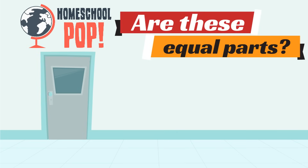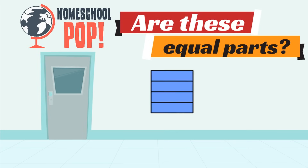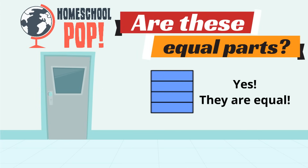Our next picture is this blue square. How many parts does this picture show? It shows four parts. Now are these parts equal? Yes, they're equal. How do we know? These parts are equal because they're the same size.